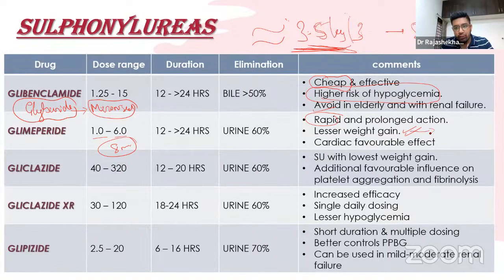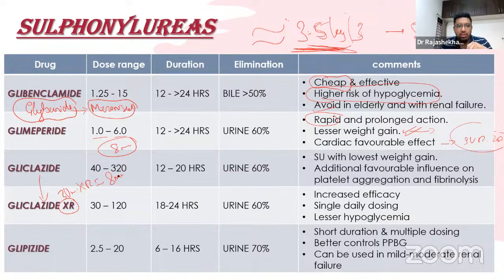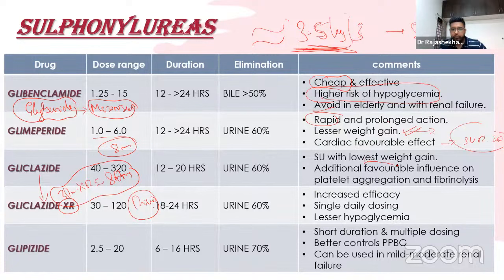Glimepiride does not affect SUR2A, so ischemic preconditioning concerns do not apply. Gliclazide is now largely used as extended release (XR): 30 mg XR is equivalent to 80 mg immediate release. Gliclazide has the lowest weight gain and lowest incidence of hypoglycemia among sulfonylureas, with evidence-based support. It also has an independent favorable effect on platelet aggregation and fibrinolysis — a potential entrance exam point.